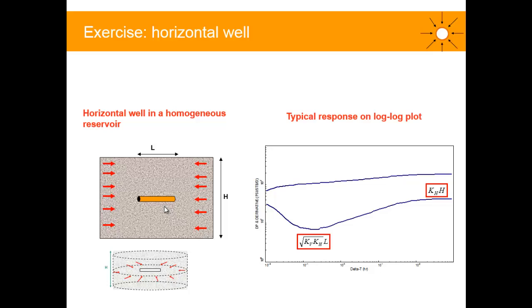At a certain distance in the reservoir, this will act as a sink and it will be equivalent to vertical well. You should expect to see this horizontal radial flow regime. Like this one, that would be across the entire net reservoir thickness.